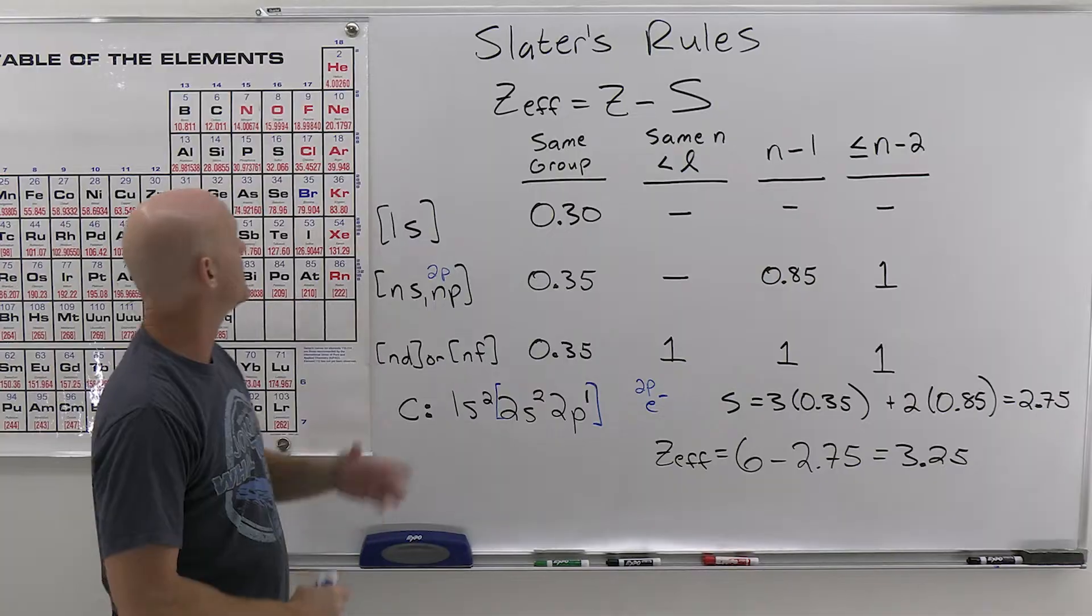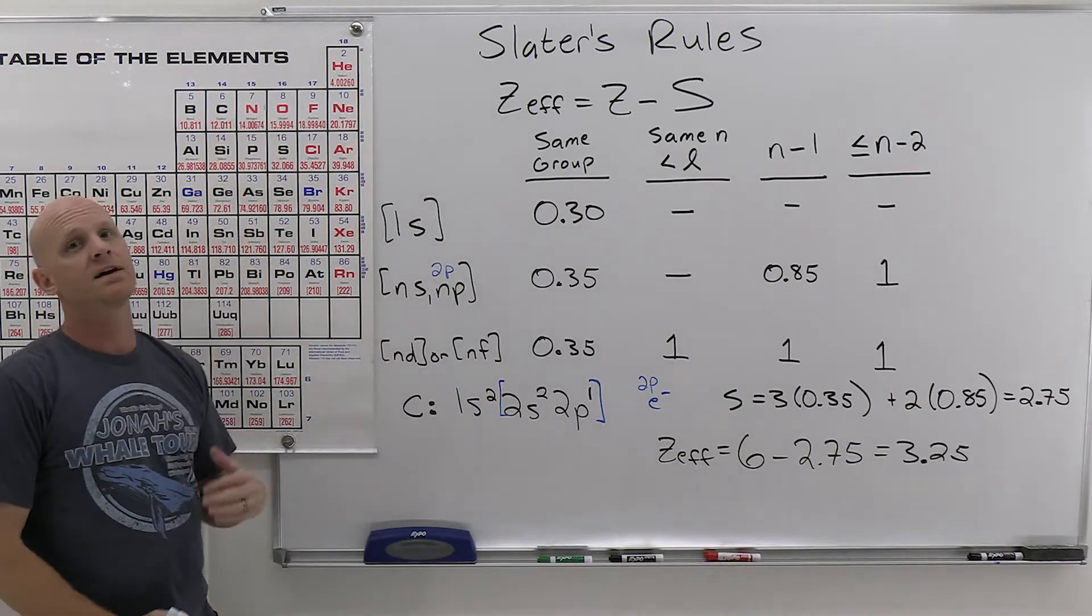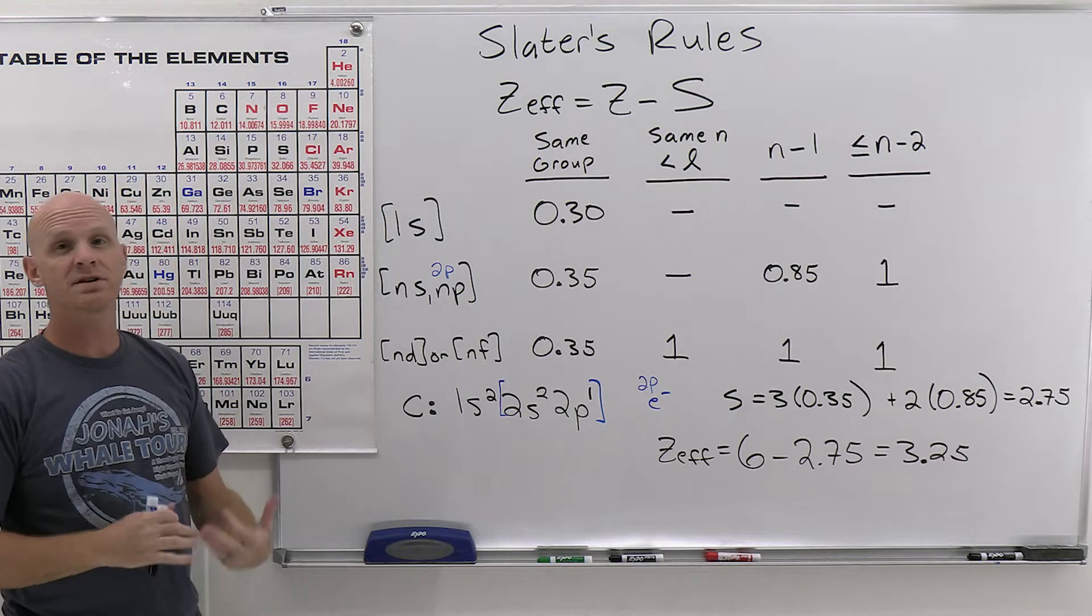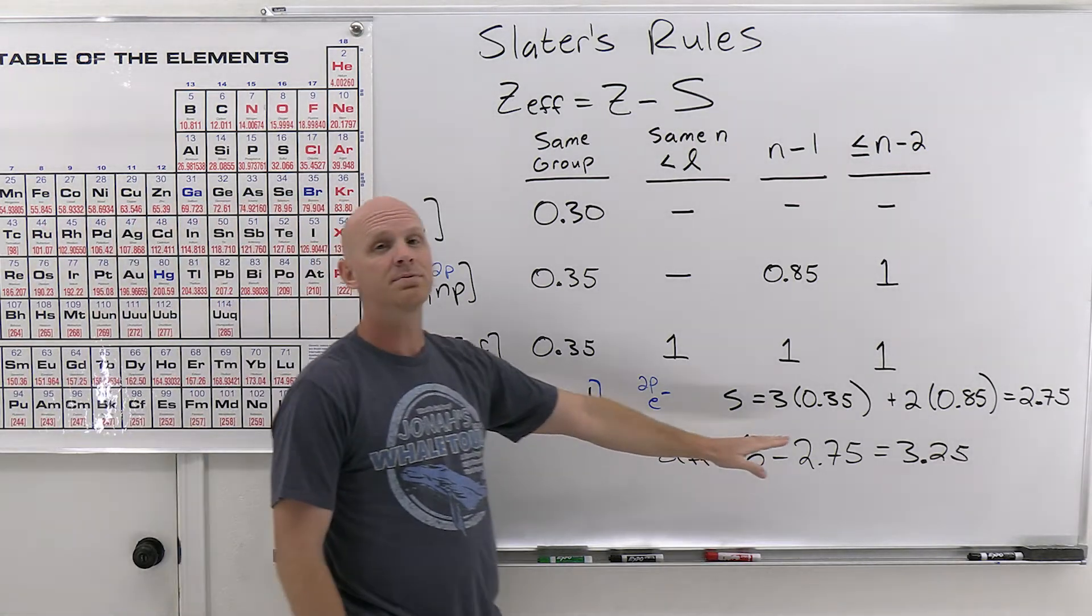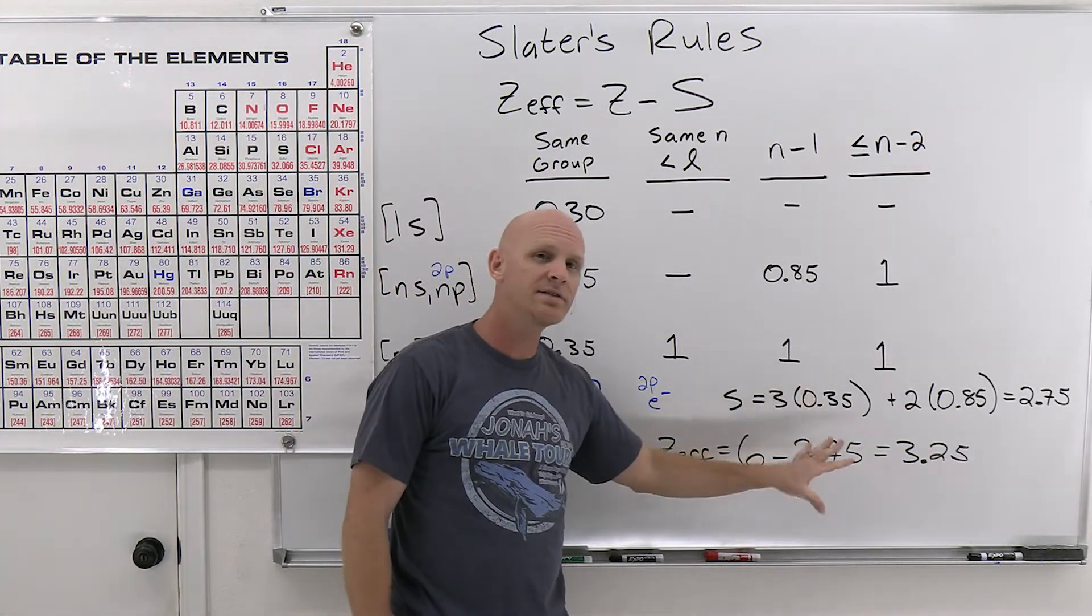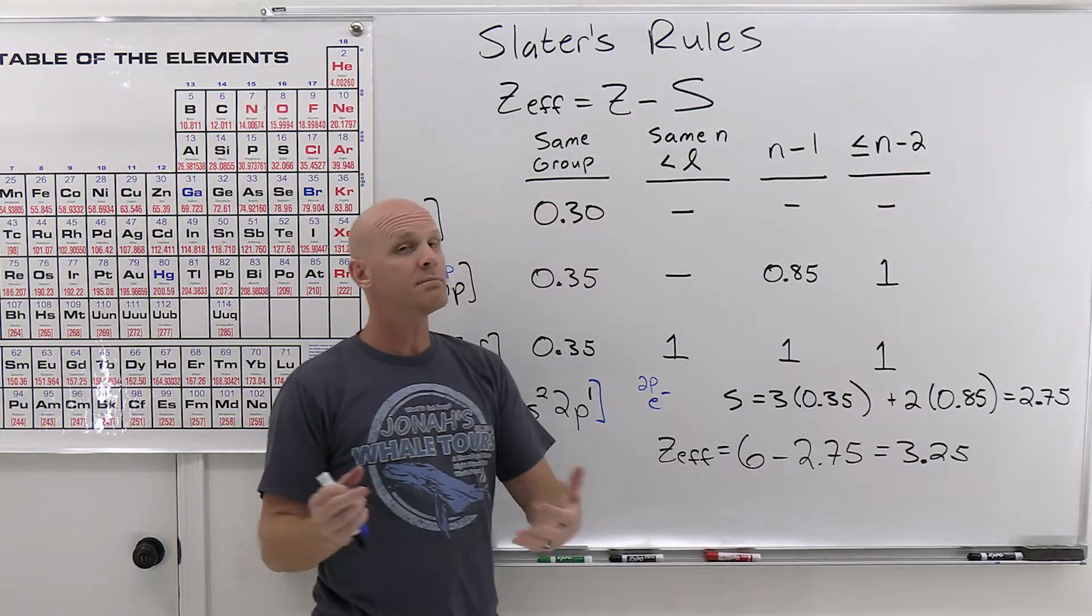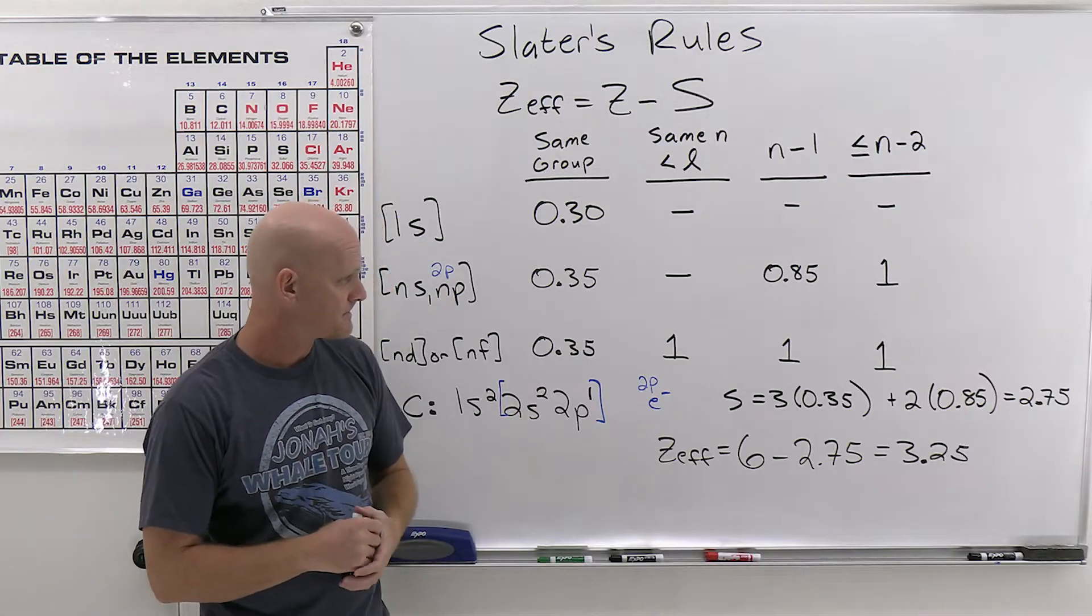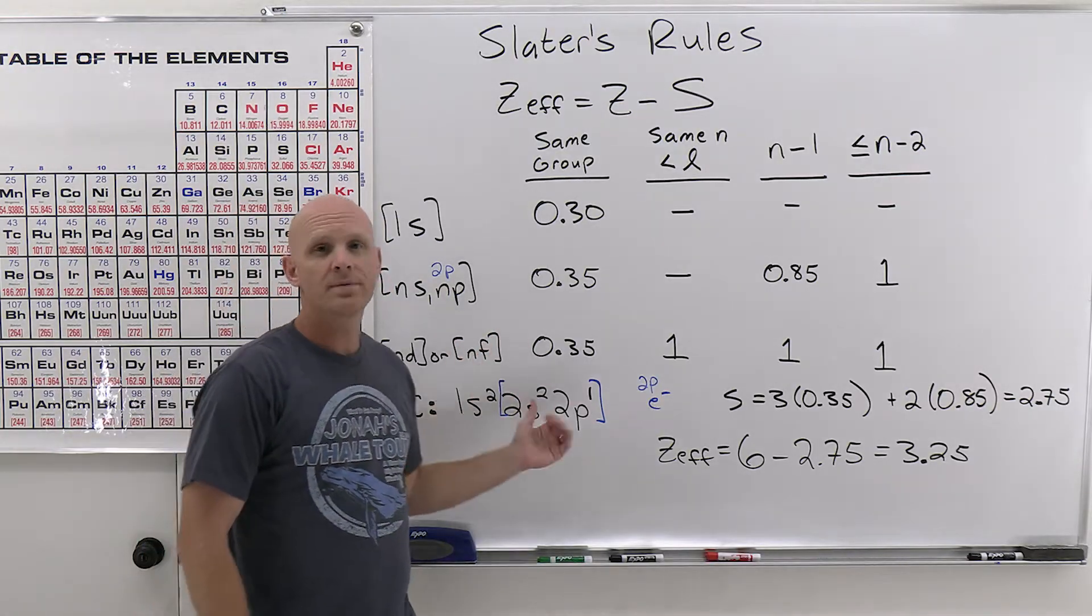And keep in mind that carbon's got 4 valence electrons, and in the last lesson, we would have approximated that effective nuclear charge is plus 4. Well again, now we find it's only plus 3.25, not quite as great attraction, and so not maybe as small as we might have otherwise predicted is carbon going to be as far as atomic radius goes. Cool. So that's carbon.